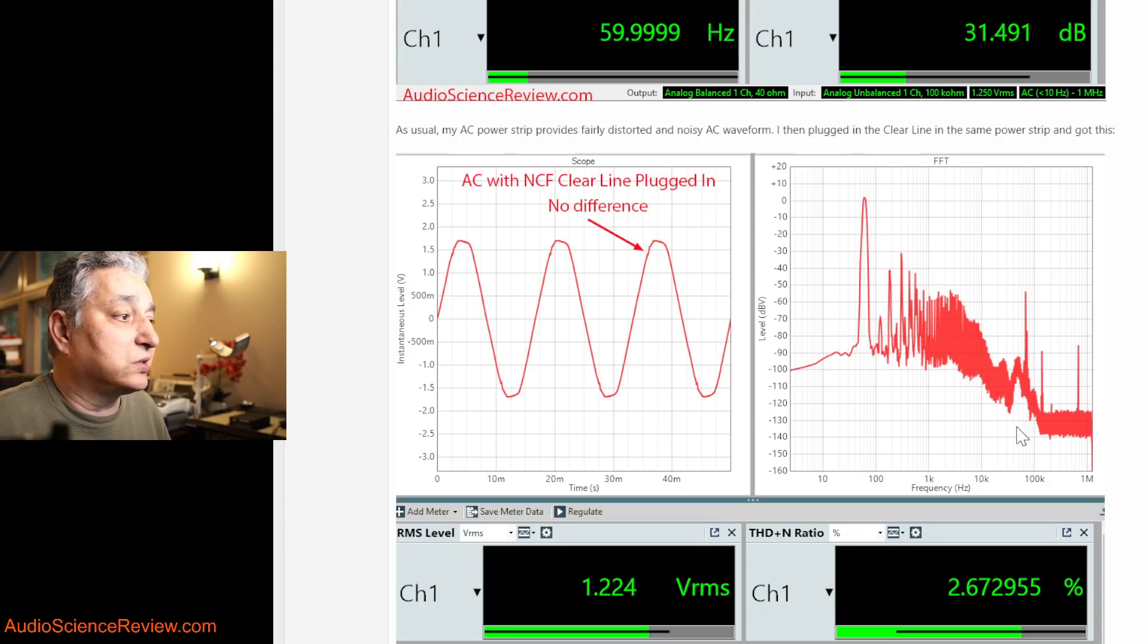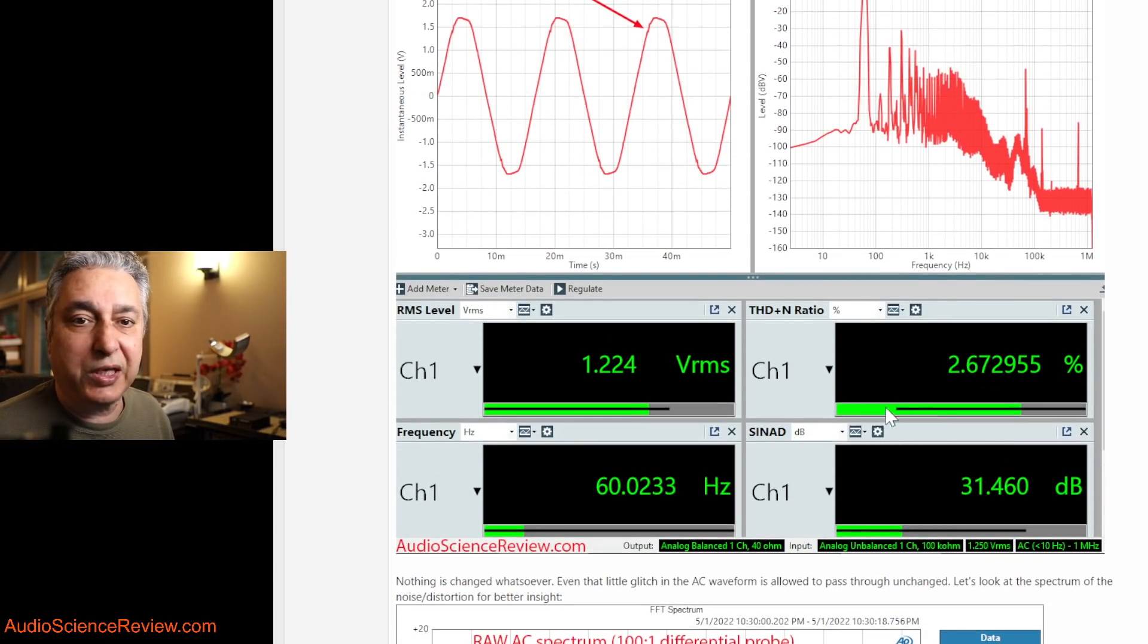Even that little glitch happily survived and came right out of the AC. So at this point, we know that this device is not a filter of any sort. Despite the company's claims, nothing has been filtered. And we're measuring all the way up to one megahertz, about 25 times higher than audible bandwidth. It's usually very easy to filter this part of the spectrum. Very disappointing that the product does absolutely nothing.